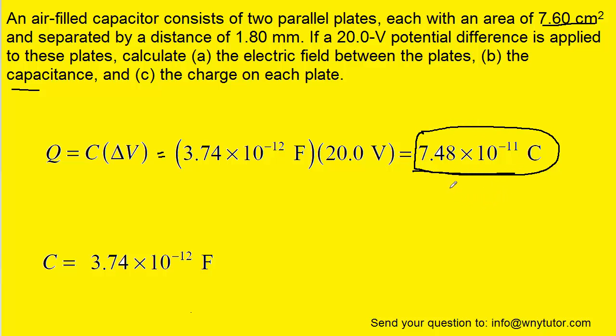If you needed to convert that to picocoulombs, you just divide by 10 to the minus 12, and you would get 74.8 picocoulombs as the correct answer. And note that one plate would have a charge of positive 74.8 picocoulombs. The other plate would be negative 74.8 picocoulombs.